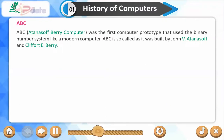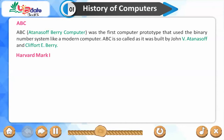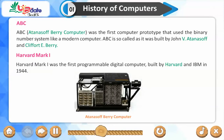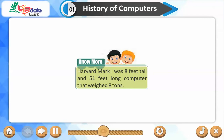ABC. The Atanasoff-Berry Computer was the first computer prototype that used the binary number system like a modern computer. It is called ABC as it was built by John V. Atanasoff and Clifford E. Berry. Harvard Mark I was the first programmable digital computer, built by Harvard and IBM in 1944. It was 8 feet tall and 51 feet long and weighed 8 tons.